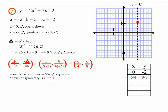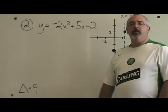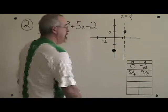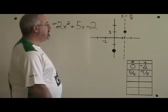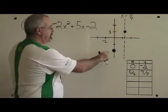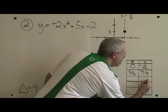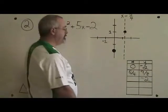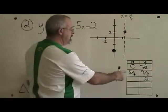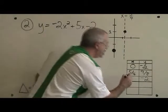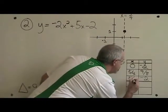This is what example two looks like before we find our mirror point. We need to find the point symmetrical to the y-intercept. The point symmetrical to the y-intercept will always have the same y-coordinate as the y-intercept. Our y-intercept's y-coordinate is negative 2, so the mirror point will also have a y of negative 2. The x-coordinate of the mirror point is always double the x-coordinate of the vertex. 5 fourths times 2 is 5 halves, so our mirror point's x-coordinate is 5 halves.